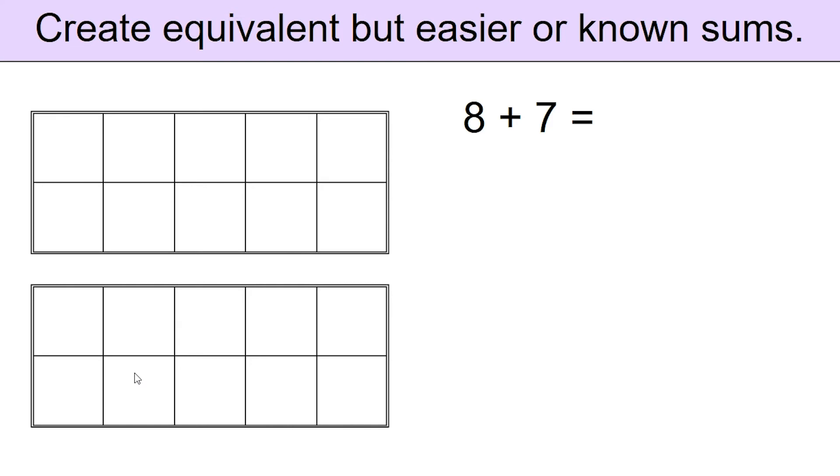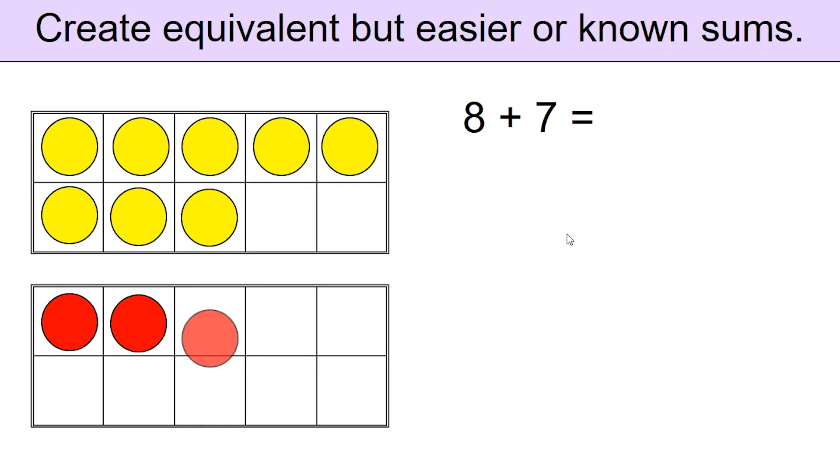As usual, in the first ten frame, place 8 yellow counters. In the second ten frame, place 7 red counters.